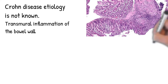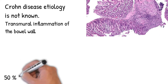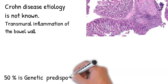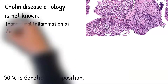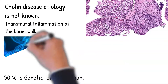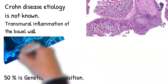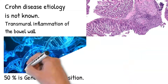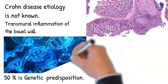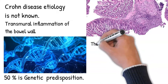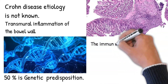The causes of Crohn's disease are unknown, but some combination of environmental, immune, and bacterial factors are implicated. Additionally, almost 50% of predisposition is genetic. The immune system attacks the gastrointestinal tract; it is not considered an autoimmune disease, but the immune response is important.